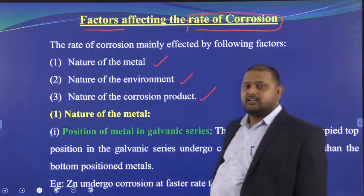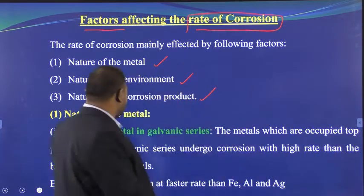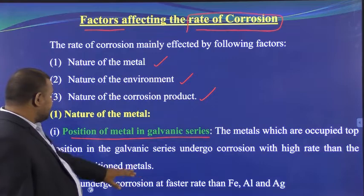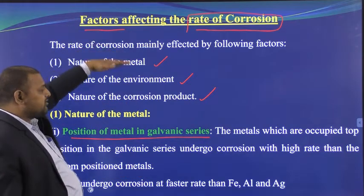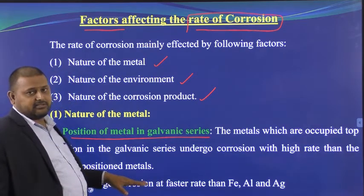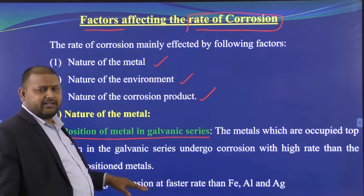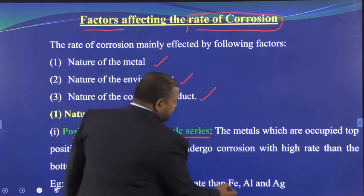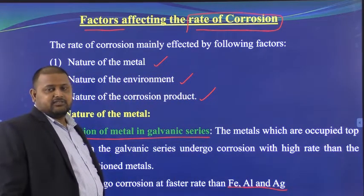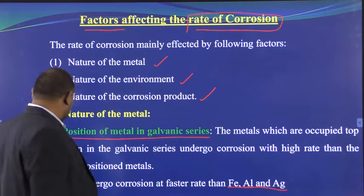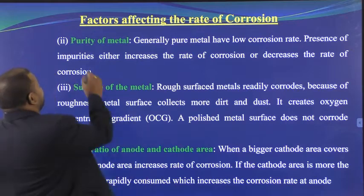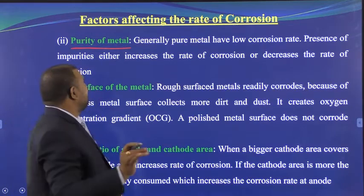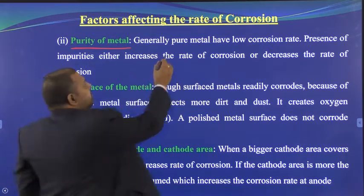Under the nature of the metal, the first point is the position of the metal in the galvanic series. Metals at the top (anodic) position undergo corrosion at a higher rate than those at the bottom. For example, zinc undergoes faster corrosion than iron, aluminum and silver. The second point is purity — if the metal is pure, corrosion is low; any impurity increases corrosion.